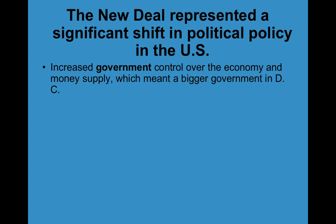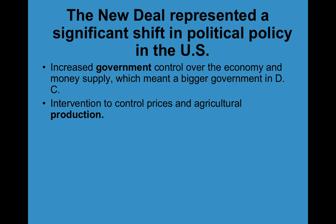You're going to read about these six programs — it's about a paragraph or less per program — and fill in the three boxes for each one on your assignment. But there are still a couple more questions to answer first. The New Deal represented a significant shift in political policy in the U.S., including increased government control over the economy and the money supply, meaning the federal government got bigger.